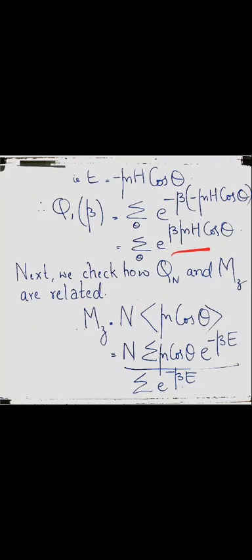Next we check how the partition function and the mean magnetic moment of the system in the direction of the field are related. To study the statistics of paramagnetism we must calculate the magnetization of the paramagnetic material. Using canonical ensemble formulation, we find the partition function and derive a relation to obtain M_z, the magnetization, from Q, the partition function.